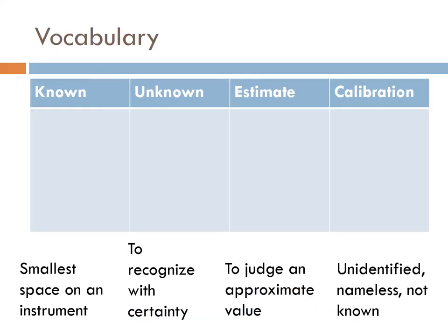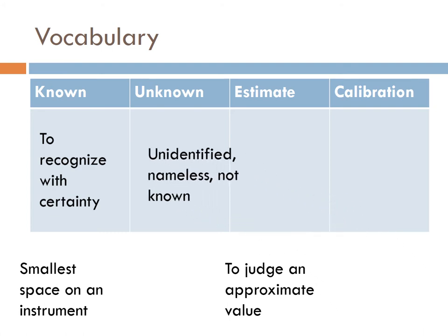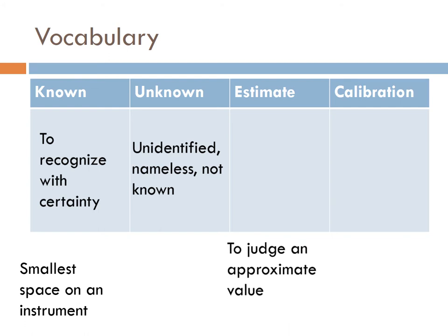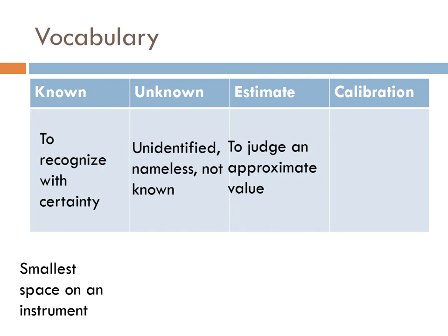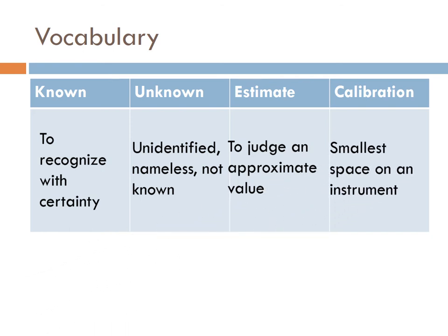A few vocab words that you will see in this lecture. Known is to recognize with certainty. The unknown would be an unidentified, nameless, not known object. An estimate is a judgment to approximate a value and a calibration is the smallest space of an instrument.